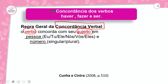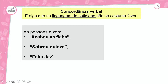O verbo concorda com o sujeito em pessoa — eu, tu, ele, nós, eles — e também em número. O verbo vai concordar com o sujeito no singular ou no plural. Regra geral: o verbo concorda com o sujeito em pessoa e em número.